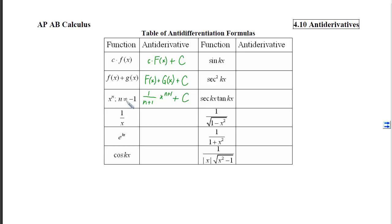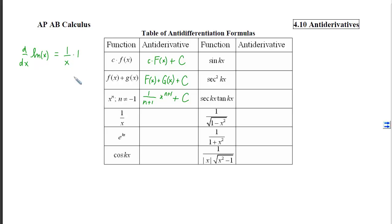Notice that n cannot be negative 1, because adding 1 gives 0 in the denominator, and dividing by 0 is not allowed. That doesn't mean we can't go backwards when x has a power of negative 1 — we just use a different function. The derivative of 1 over x comes from the natural log of x, since log naturals give 1 over the inside times the derivative of the inside. So the antiderivative of 1 over x is ln of x plus some constant.